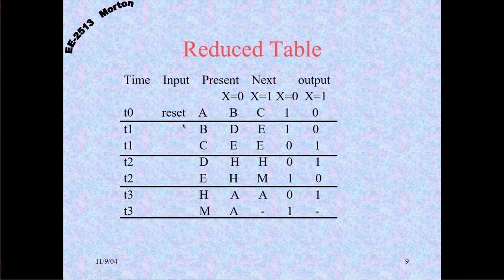Here's our reduced state table. The state naming is a bit goofy — A, B, C, D, E, H, M — but so be it. We could rename these if we wanted. Now we only have seven states, so we can get by with three flip-flops. Three flip-flops can handle eight states, and we only have seven, so we'll have one don't care state.